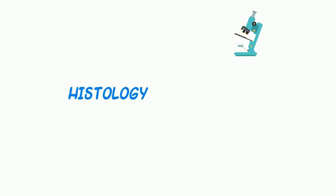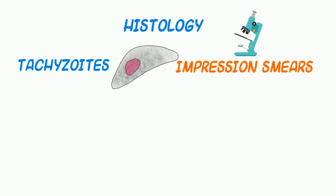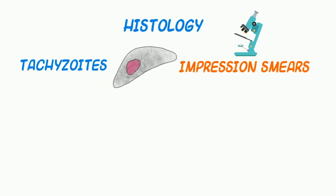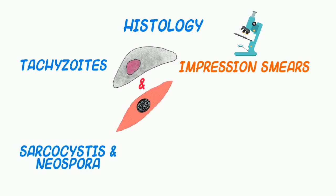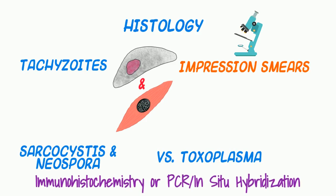To confirm toxo in an animal after death, tachyzoites may be shown with impression smears. Microscopic examination of tissue may reveal the presence of tachyzoites or bradyzoites. The biggest challenge is differentiating Sarcocystis and Neospora species from Toxoplasma, and generally immunological and molecular genetic techniques are required to make this distinction.